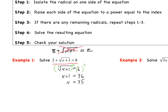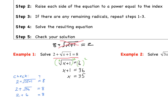Before we box this as our answer, we always, always, always need to check and verify. We check in the original problem: does x really equal 35? So we test 2 plus the square root of 35 plus 1 — does that equal 8? That gives us 2 plus the square root of 36, which is 2 plus 6, which is 8. We get 8 equals 8 — a true statement. So we can box this answer: x equals 35.